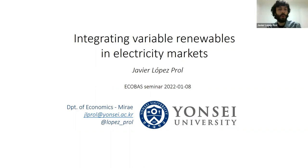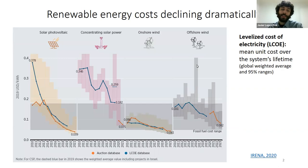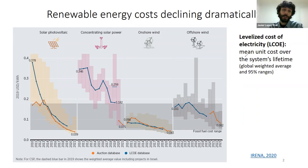When talking about variable renewables, the first thing we have to talk about is how impressive their cost development has been in the last decade. In this graph you can see the levelized cost of electricity, which is just the average cost per kilowatt hour or per megawatt hour during the lifetime of the system. Here we can see different renewable technologies — we can see solar PV, usually called just PV for photovoltaics.